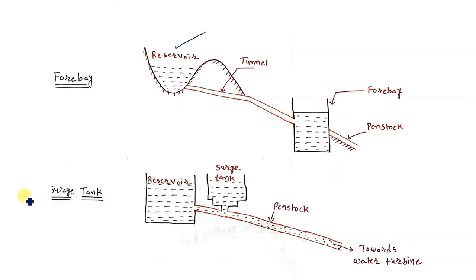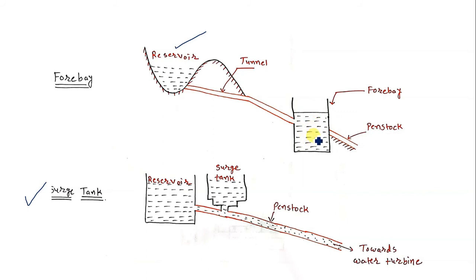The forebay stores water when the load on the plant reduces, and that same stored water is supplied to the turbine when the load on the plant increases. So it is used to regulate the water intake to the turbine. When load decreases the water flow should be less, and the forebay controls water flow under both high and low load demand.